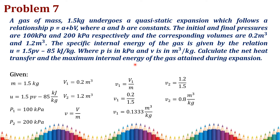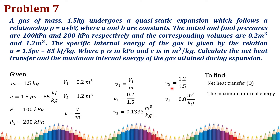We need to convert all values to specific volume. Specific volume equals total volume divided by mass. So specific volume v1 = 0.2 / 1.5 = 0.133 m³/kg. Similarly, v2 = 1.2 / 1.5 = 0.8 m³/kg.